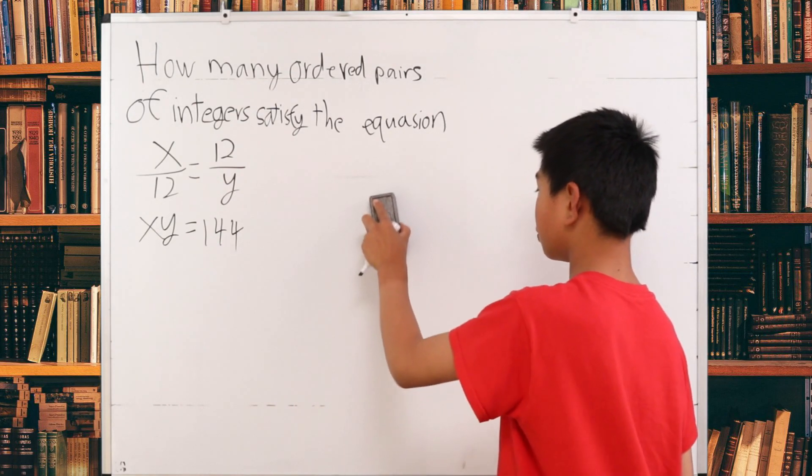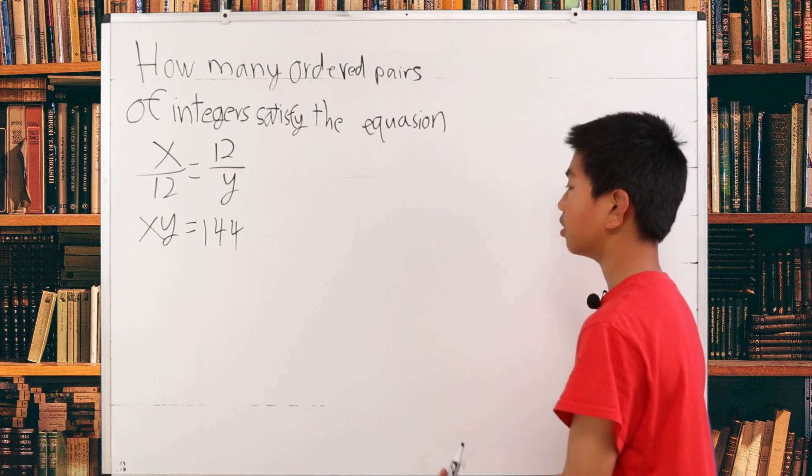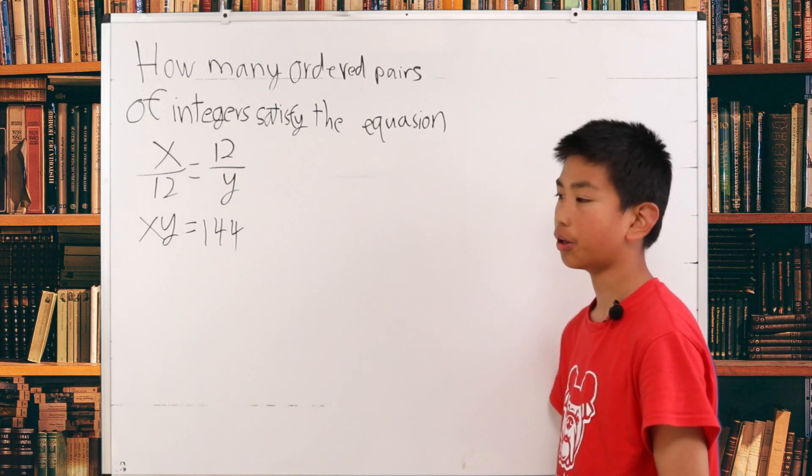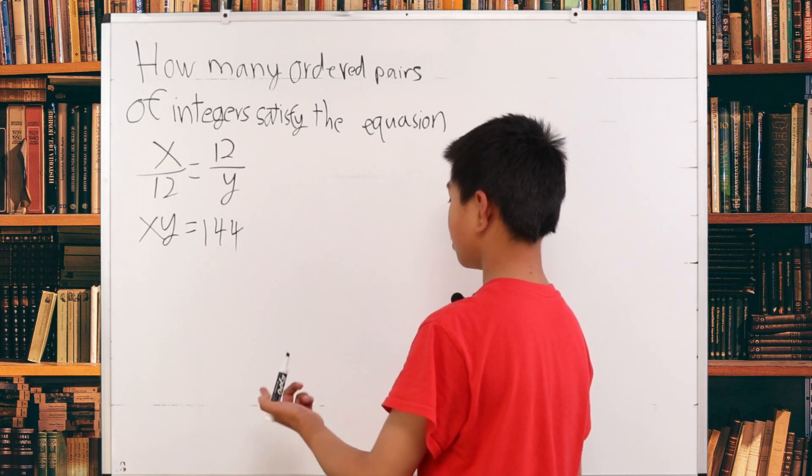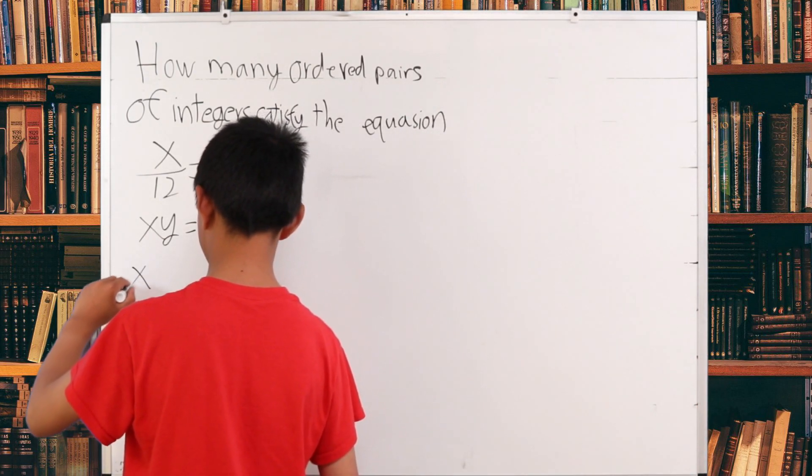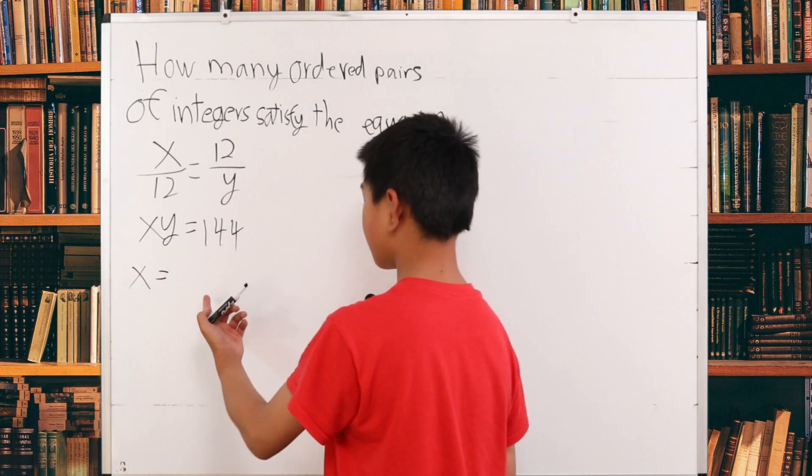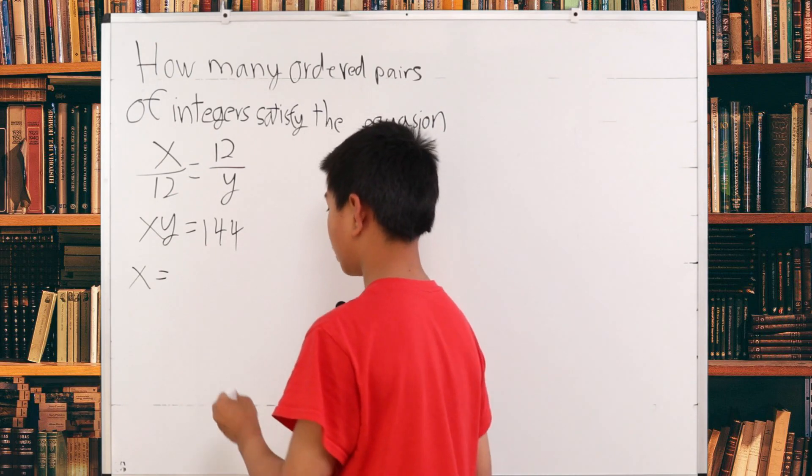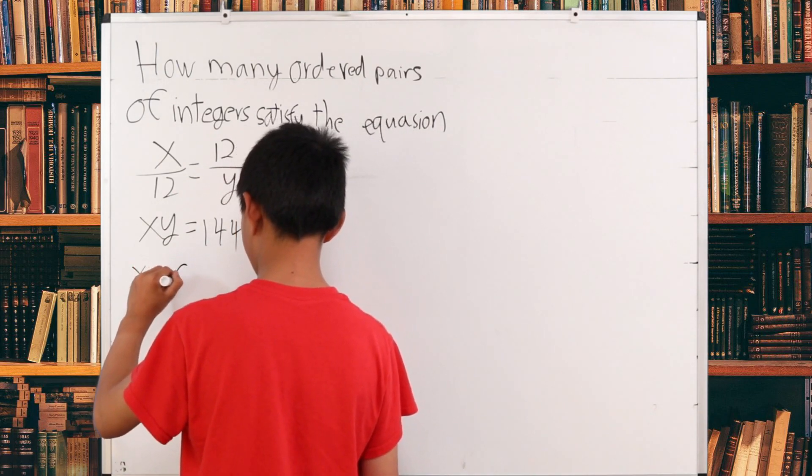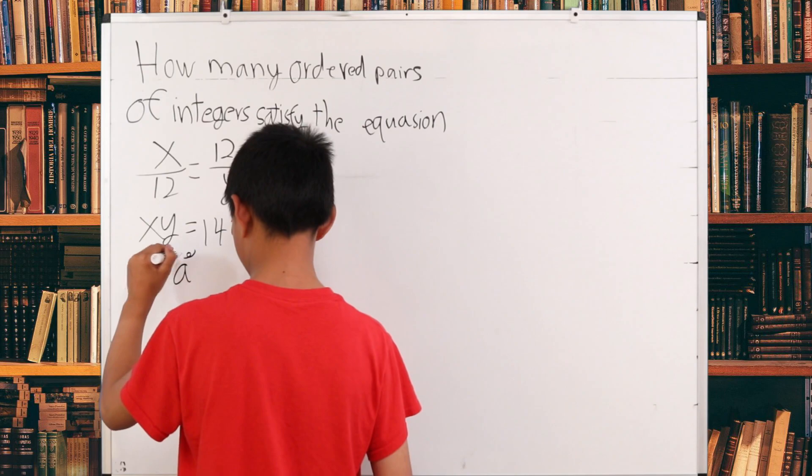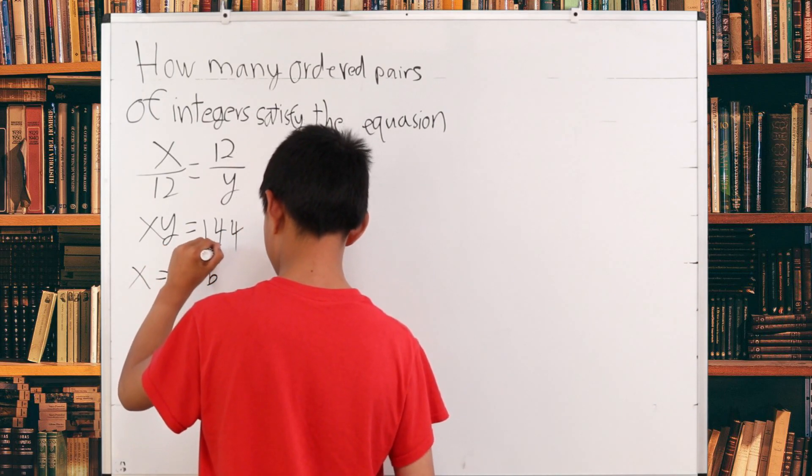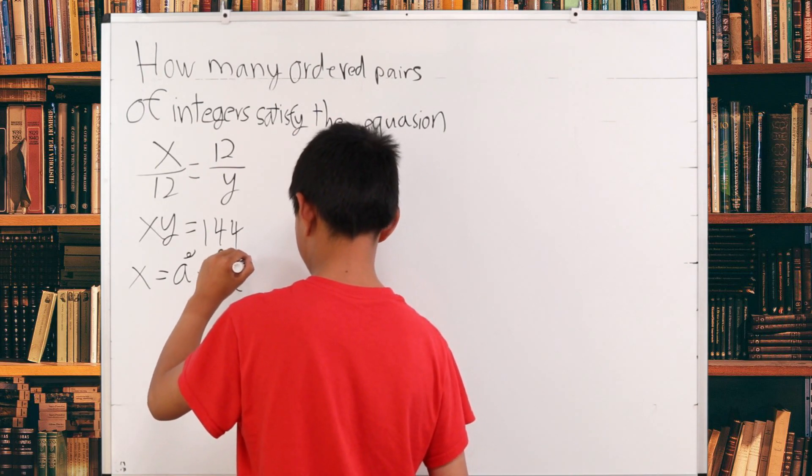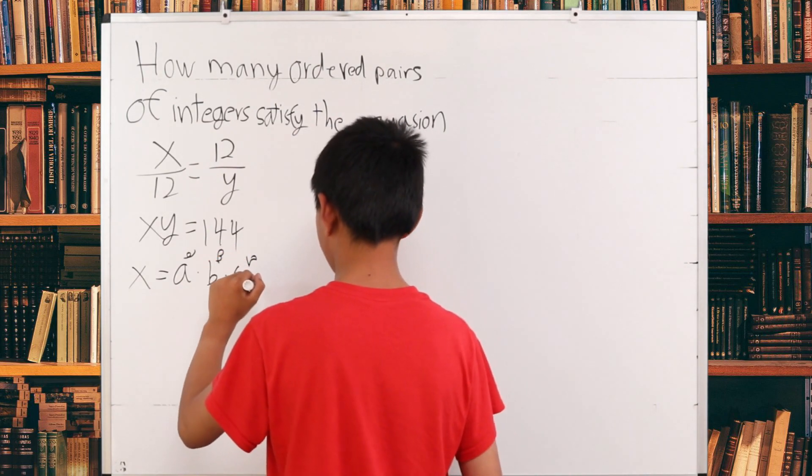So what we're going to do is a method that not a lot of people actually know. We have something like a random thing as x. It can be split into different numbers like a to the power of alpha times b to the power of beta times c to the power of gamma, etc.